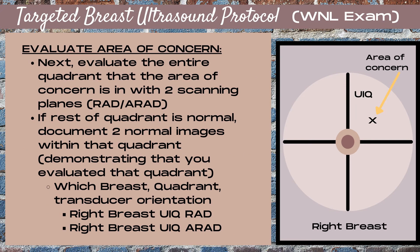After taking two specific negative images directly over the area of concern, you next want to evaluate the entire quadrant that the area of concern is in. For this example, that means evaluating the entire upper inner quadrant of the breast in both radial and antiradial planes. Once you've determined the quadrant is completely normal and no pathology was found, you want to document to your radiologist that you've evaluated not only the area of concern but also the surrounding tissue. So take two negative images of that quadrant as well.